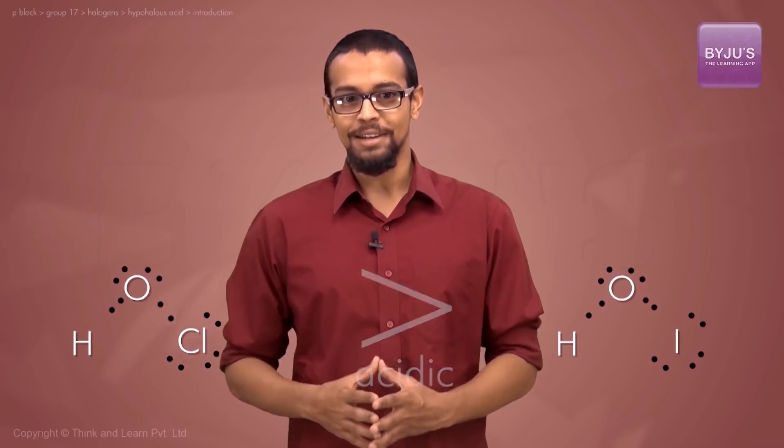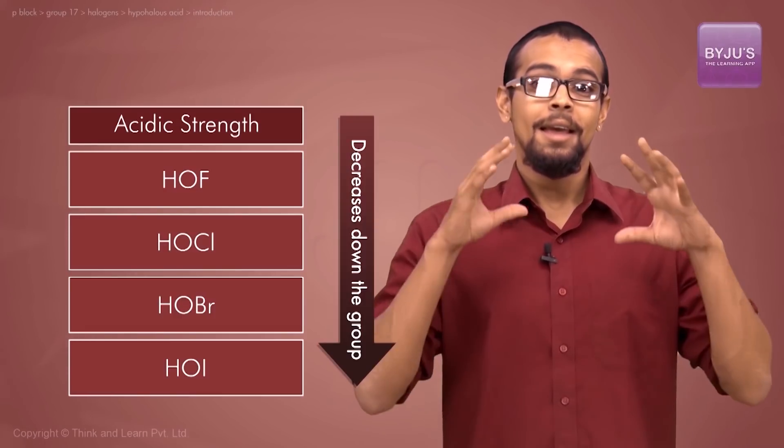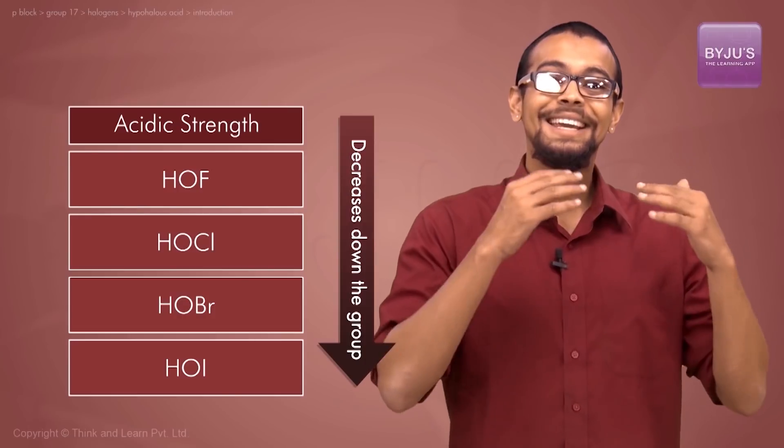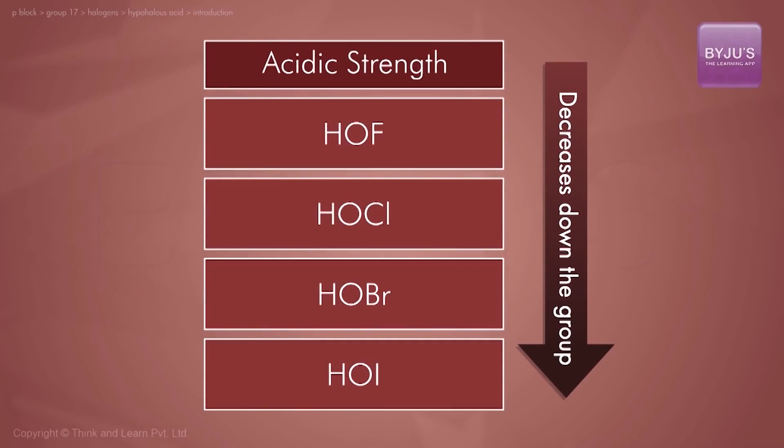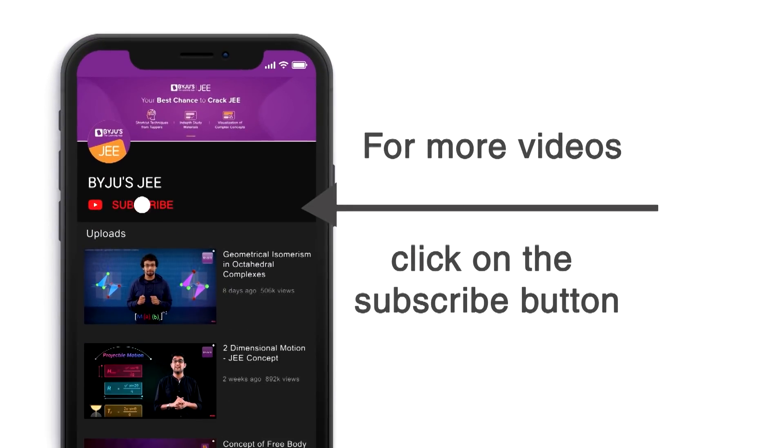As a trend, as you go down the group considering hypohalous compounds, the acid strength or acidic character decreases. For more videos and live lectures on the JEE, click the subscribe button now.